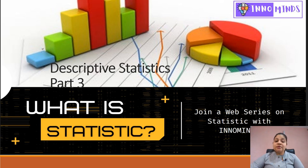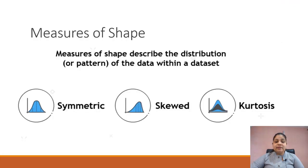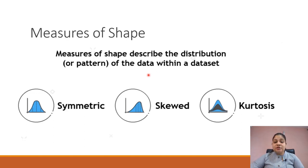Welcome back to the third part of descriptive statistics. In this we'll be seeing what is measure of shape. Measure of shape basically describes the distribution or the pattern of the data within the dataset. It can be measured with the help of three parameters: one is symmetric, another one is skewed, and the third one is kurtosis. Let's see them one by one.